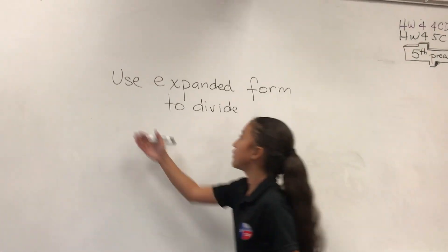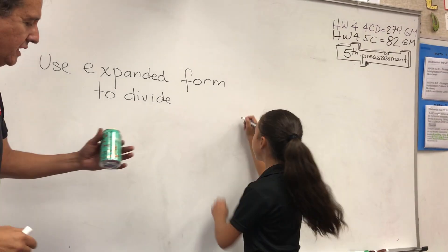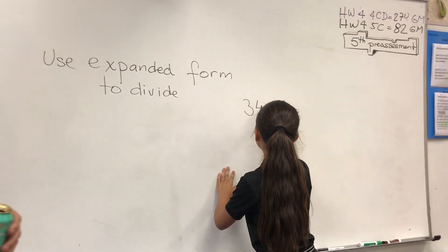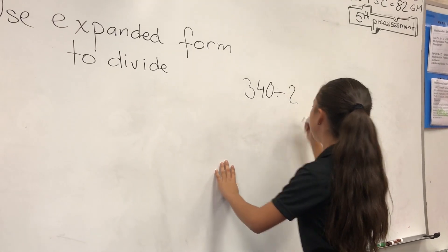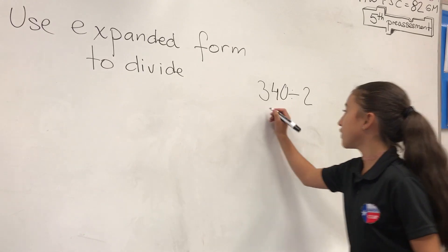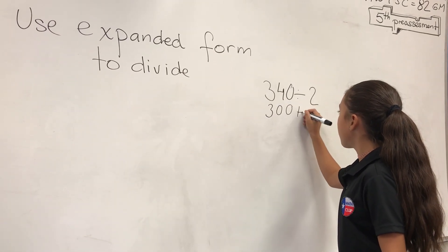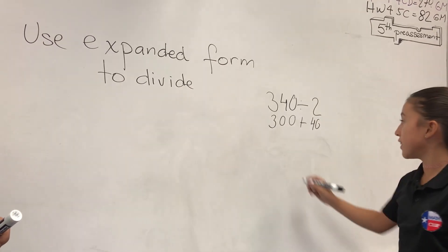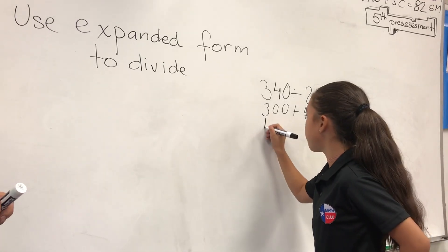We're going to use expanded form to divide. So 340 is 300 plus 40. Now what's the half of 300? 150.